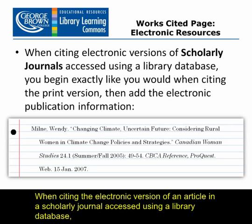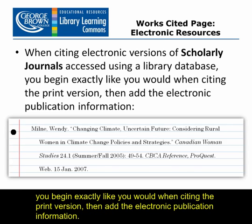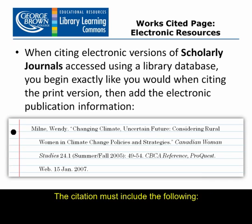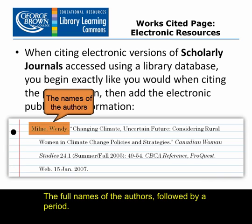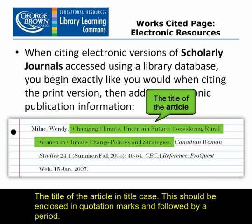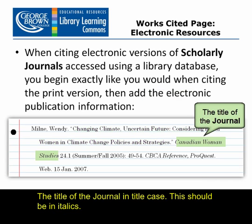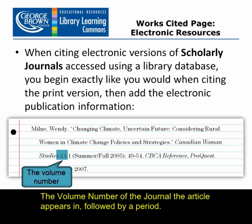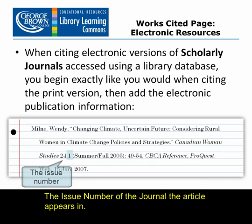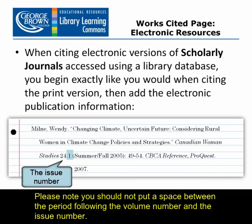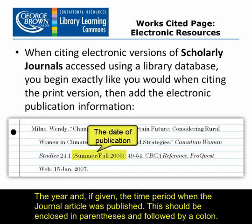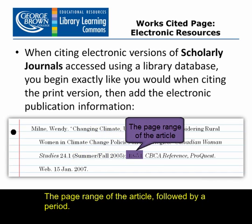When citing the electronic version of an article in a scholarly journal accessed using a library database, you begin exactly like you would when citing the print version, then add the electronic publication information. The citation must include: the full names of the authors, followed by a period; the title of the article in title case, enclosed in quotation marks and followed by a period; the title of the journal in title case in italics; the volume number followed by a period; and the issue number. Please note, you should not put a space between the period following the volume number and the issue number. The year, and if given the time period when the journal article was published, enclosed in parentheses and followed by a colon. The page range of the article, followed by a period.